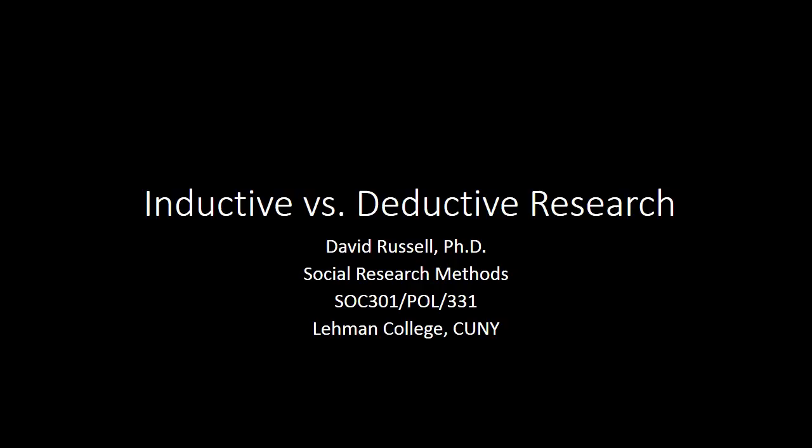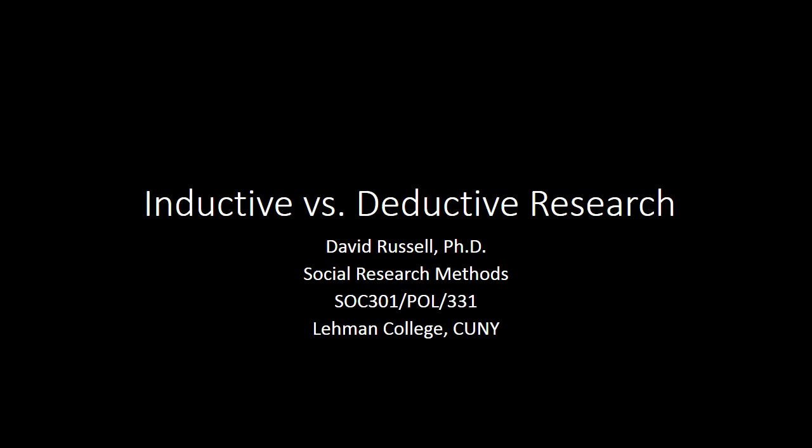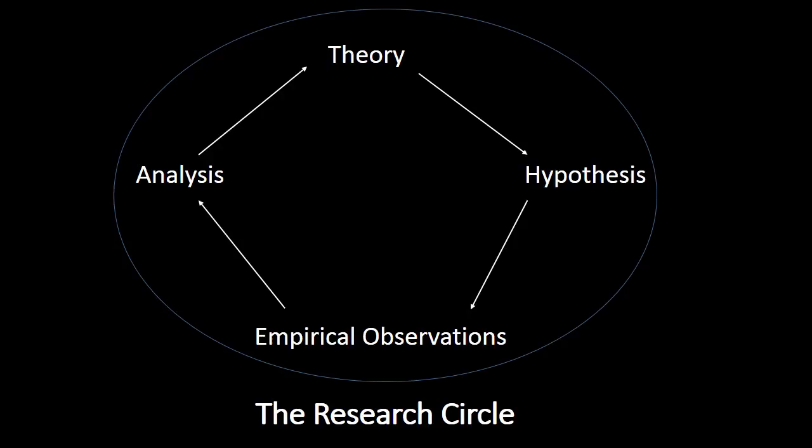Before we talk about the difference between inductive and deductive research, I want to introduce you to the research circle. The research circle is a visual diagram that represents the research process. There are four basic components of the research process. The first is theory, which represents a set of ideas that help you explain a particular social phenomenon.